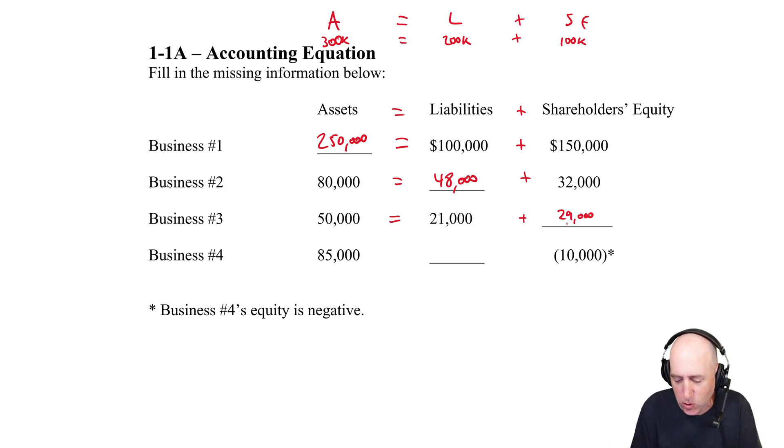Again, A equals L plus SE. People bought houses that they thought, when the mortgage company thought, was worth say 500K. They gave them a $450,000 mortgage, meaning the person put down 50 grand, and their equity was $50,000 in the house.